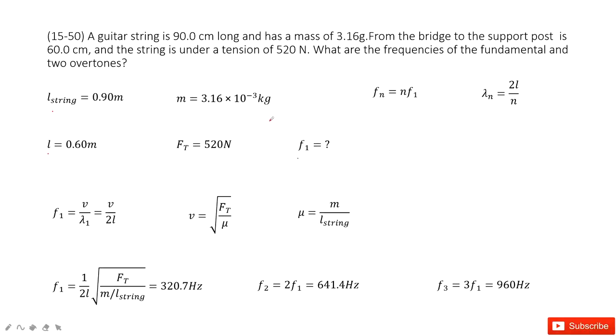We know for standing waves, the length from the two ends is l, so the wavelength can be 2l over n for standing waves. And the frequency fn equals n times f1, where f1 is the fundamental frequency. This is in our textbook.